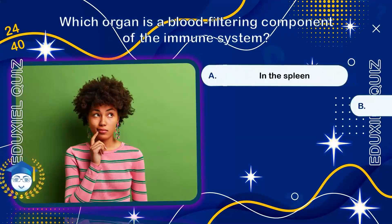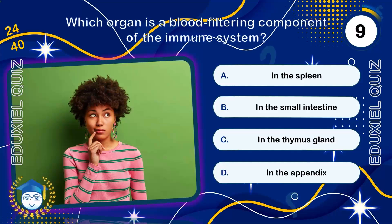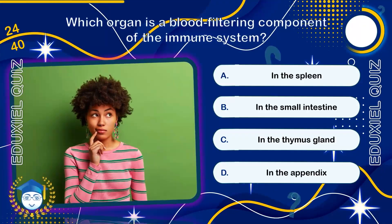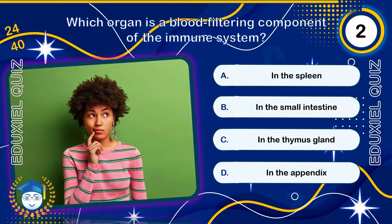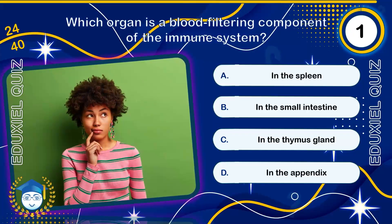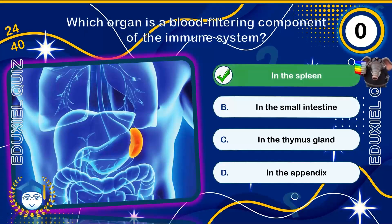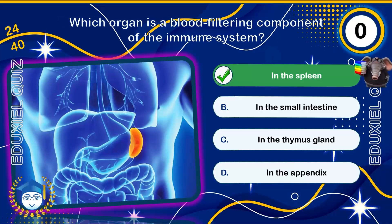Which organ is a blood-filtering component of the immune system? The spleen. The spleen, located in the upper left abdomen, is essentially a giant lymph node and a critical blood filter and recycling center.